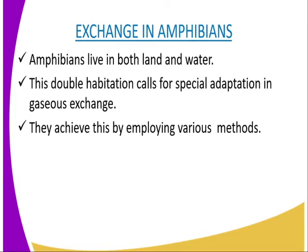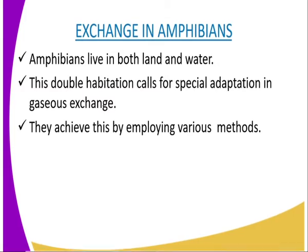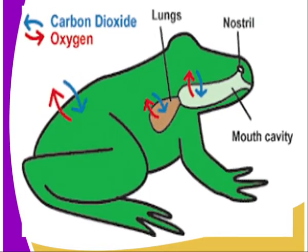Gaseous exchange can take place either through the mouth cavity, through the lungs, or through the skin. So we are going to explain each of the three. The gaseous exchange in amphibians can take place through the lungs, through the skin, or the buccal cavity — which is another term for the mouth.